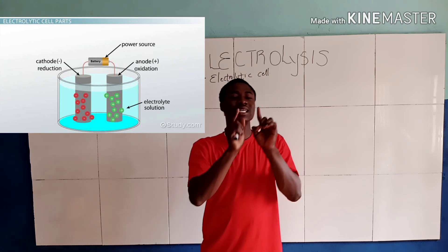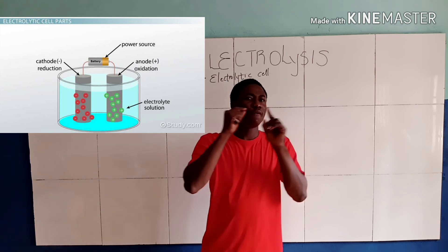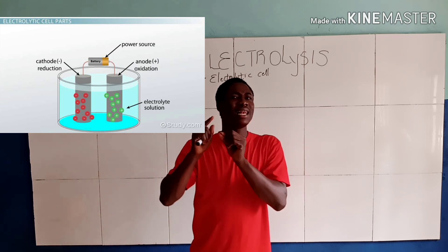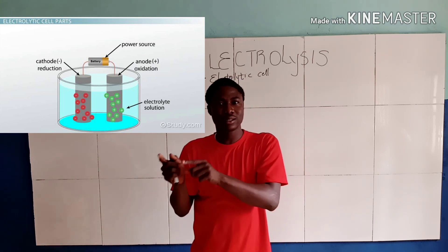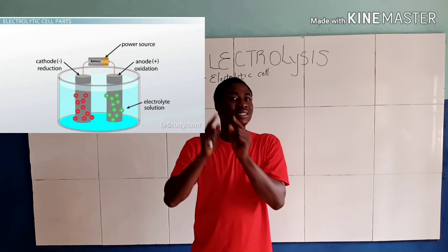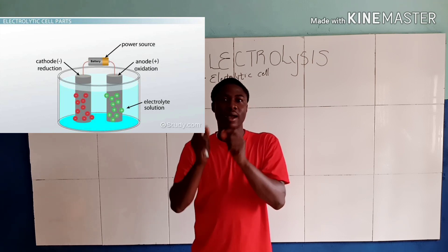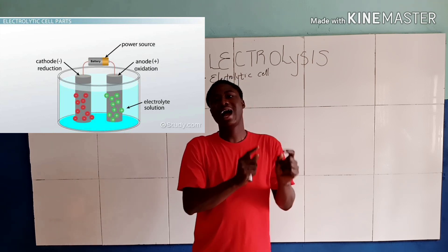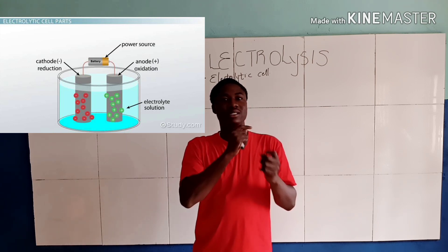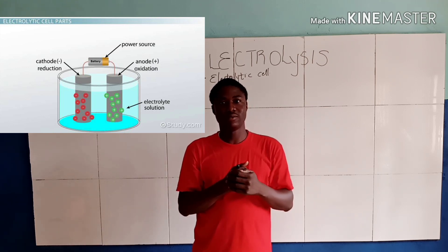This electrode is the cathode and the anode. The cathode for an electrolytic cell is negative while the anode is positive.